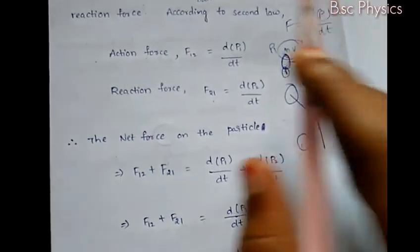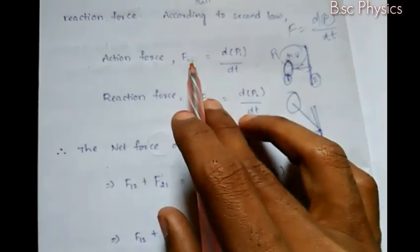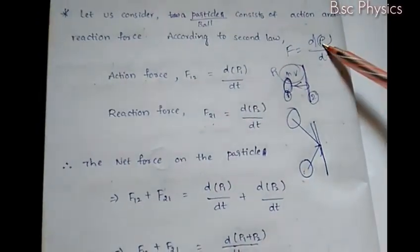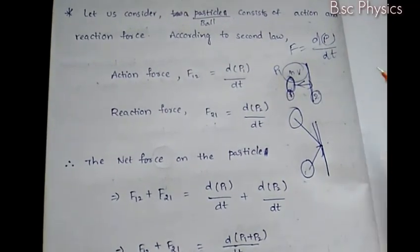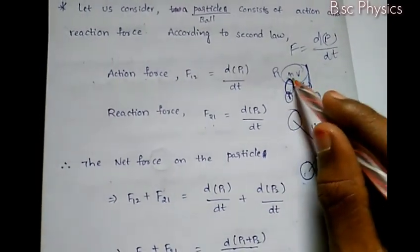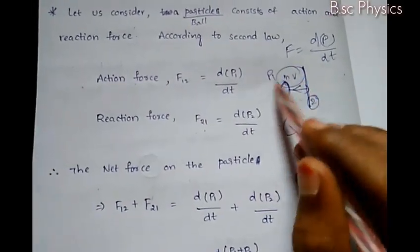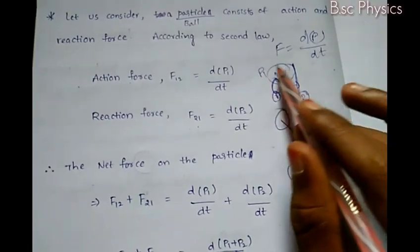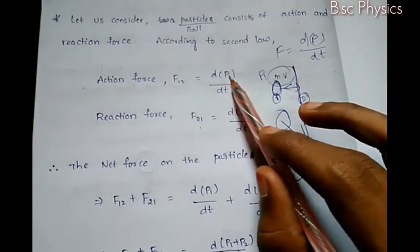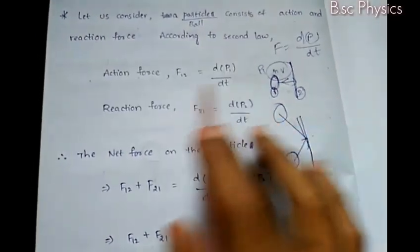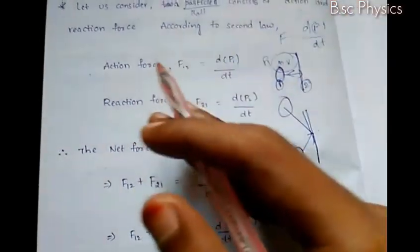Consider a ball and a wall. Force F is equal to dp/dt — force equals rate of change of momentum. Momentum P equals mass times velocity. The action force F12 acts on the ball, corresponding to momentum P1, so F12 equals dP1/dt.